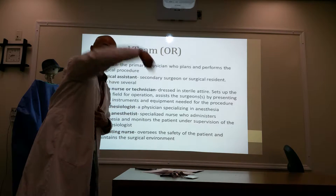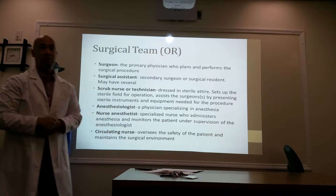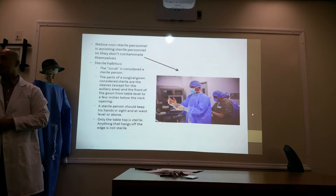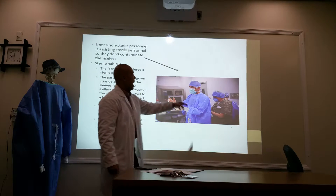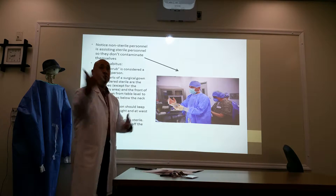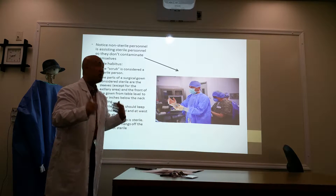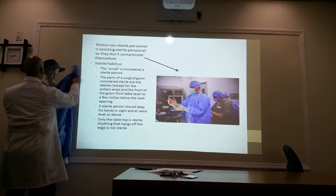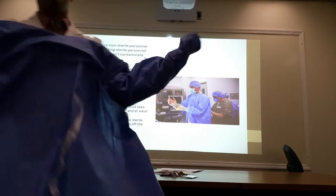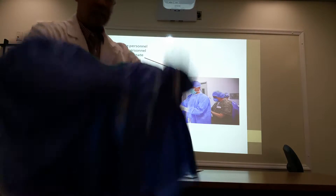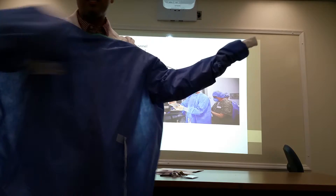The scrubbed personnel wash their hands outside, then enter the operating room still wearing their scrubs. Inside, they put on a sterile gown to cover their non-sterile attire. The gown creates a separation between what's inside and outside. The gown itself is packaged in sterilized packaging — sent to a company that removed all microorganisms and their spores — making it sterile.